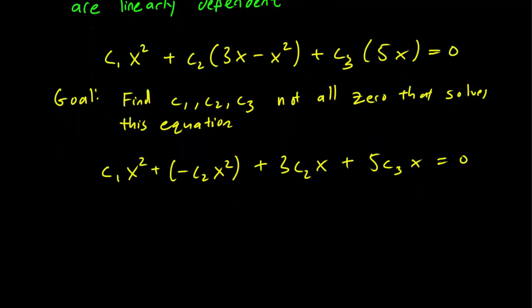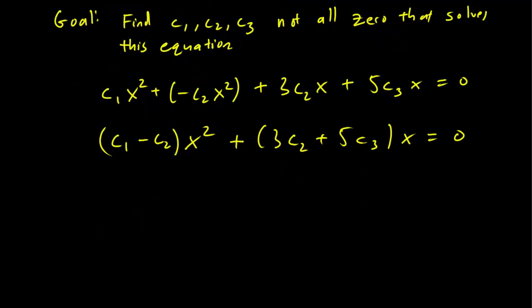And we can group them together this way. So c1 minus c2 x squared plus 3 c2 plus 5 c3 x equals zero. So we need both of these equations to be zero in order for this entire equation to be zero.